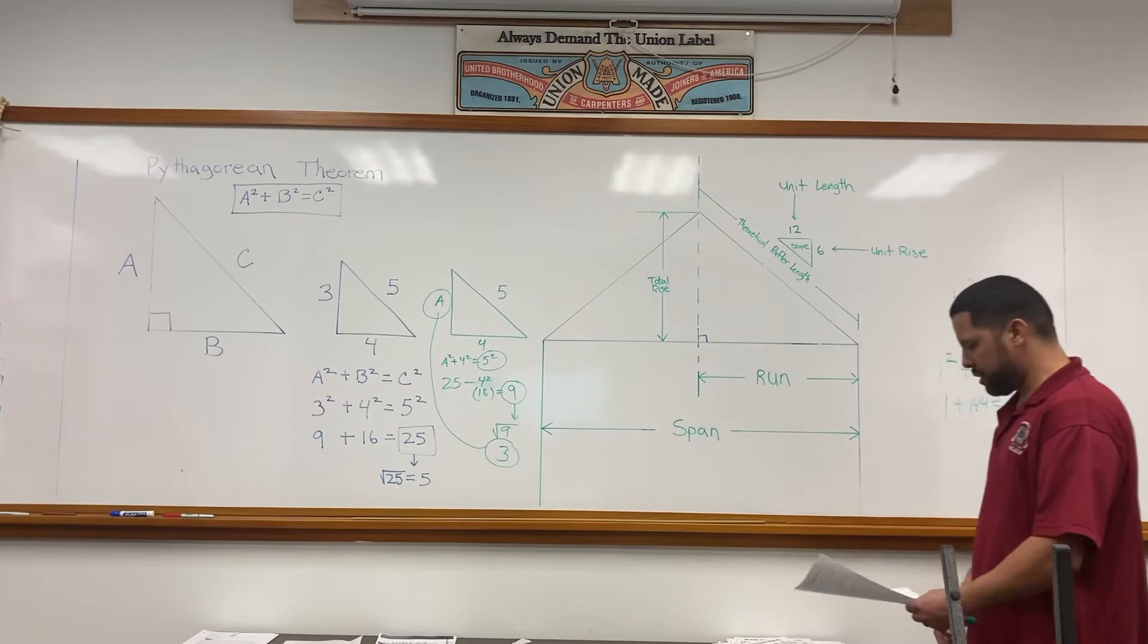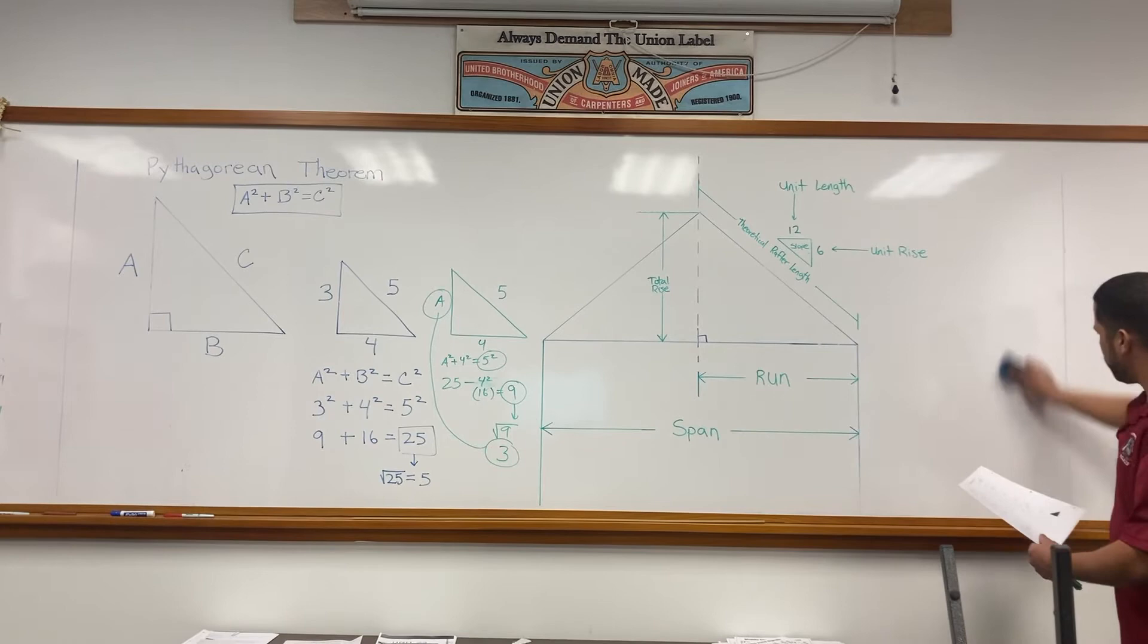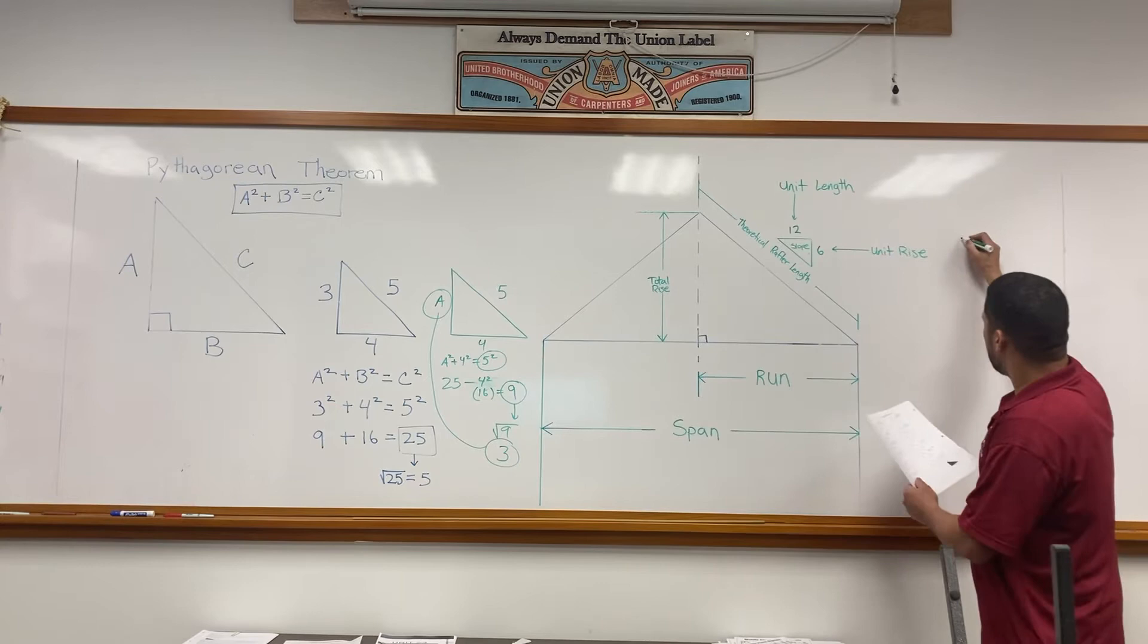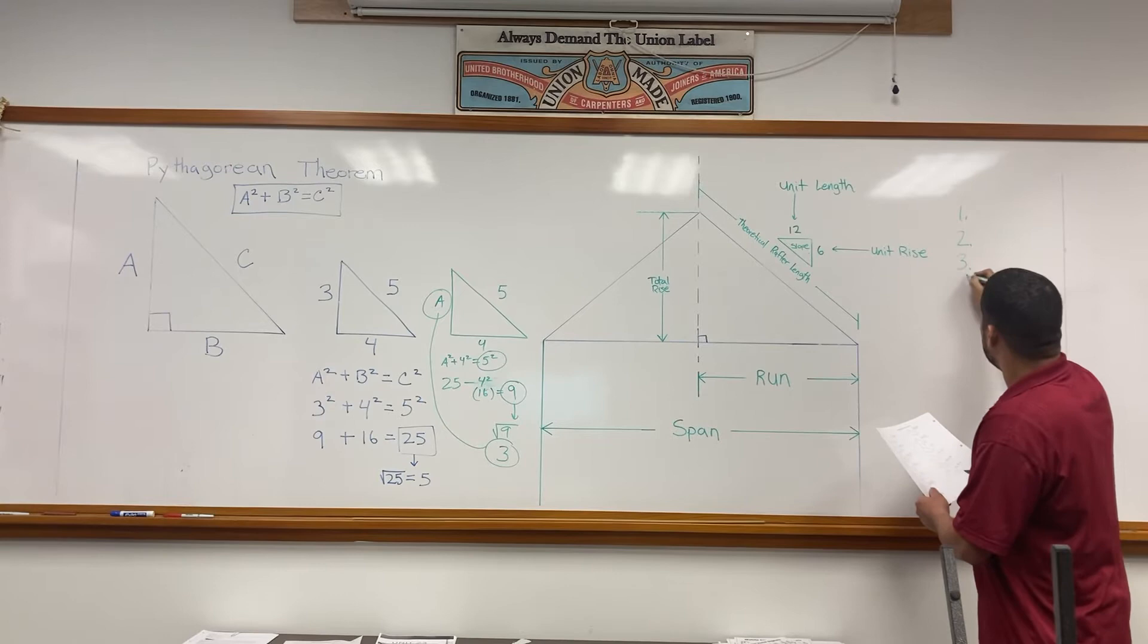Now that you've completed the right triangle sheet from 1 through 12, let's plug these numbers right in here. We're going to go from 1 through 12.